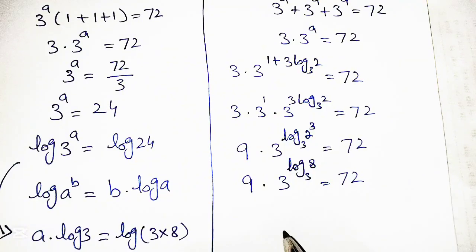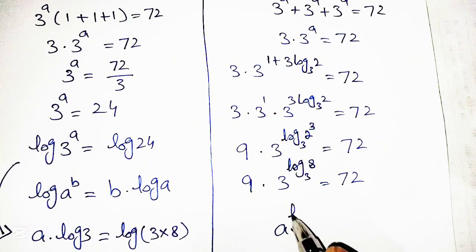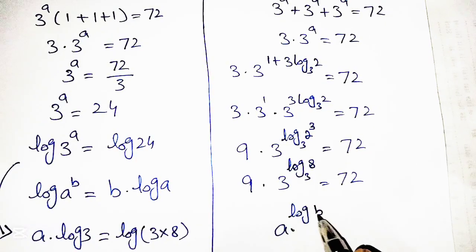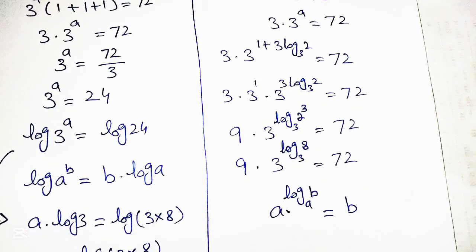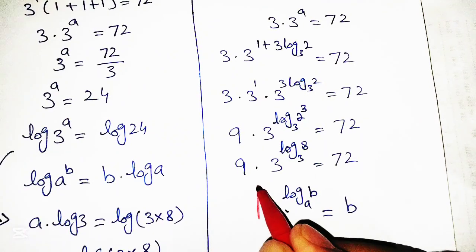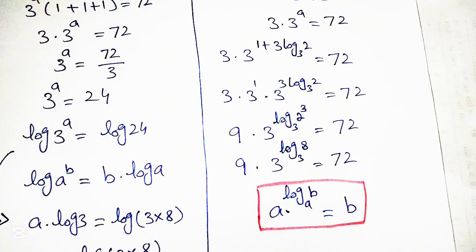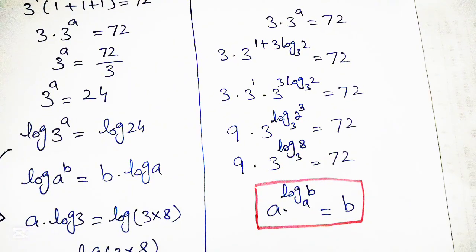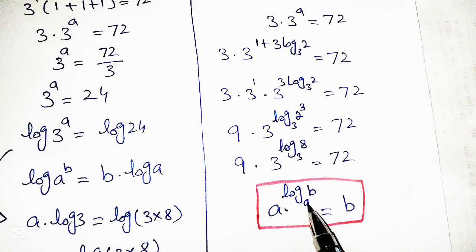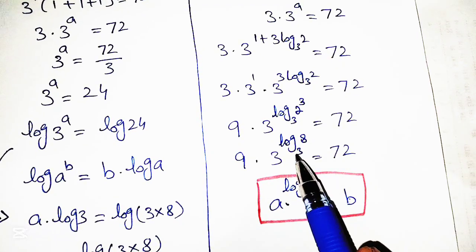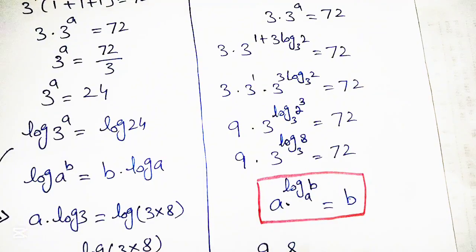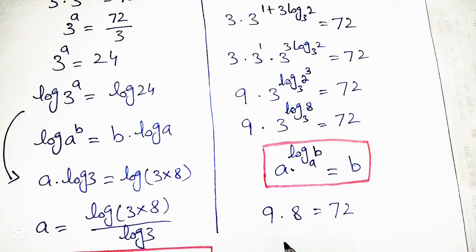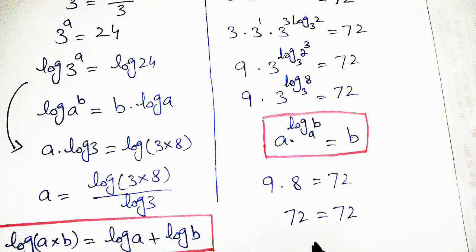We use the basic logarithmic formula: a raised to log base a of b is equal to b. If the base of the exponential and the base of the logarithm are the same, then a raised to log base a of b equals b. Applying this formula, 3 raised to log base 3 of 8 becomes 8, so we get 9 into 8, which equals 72.